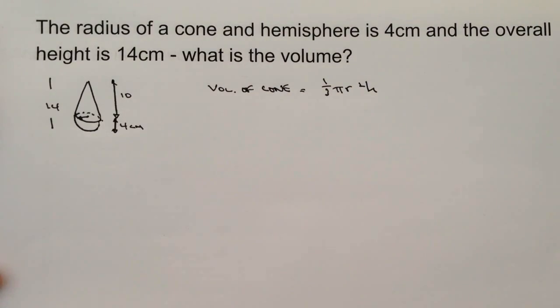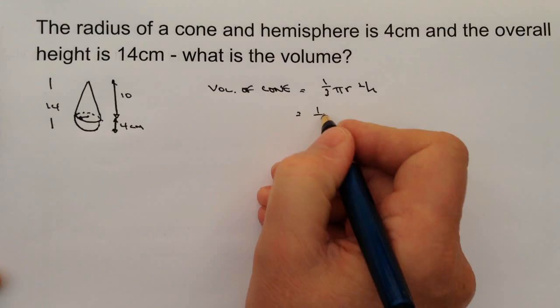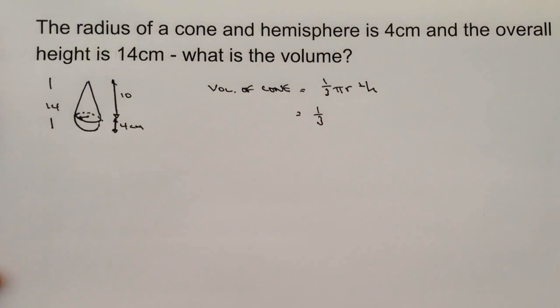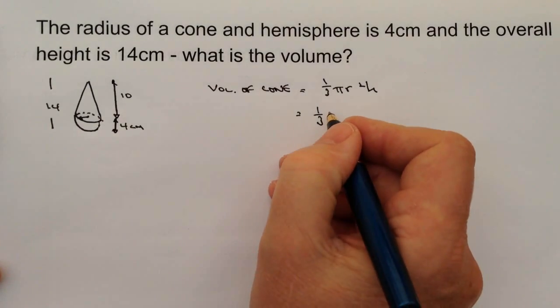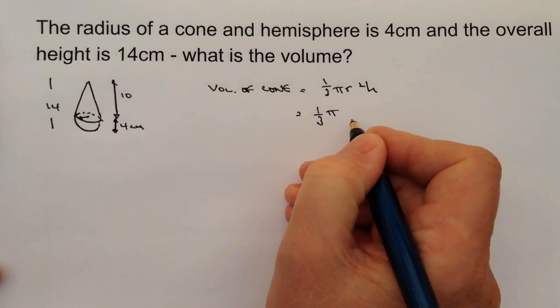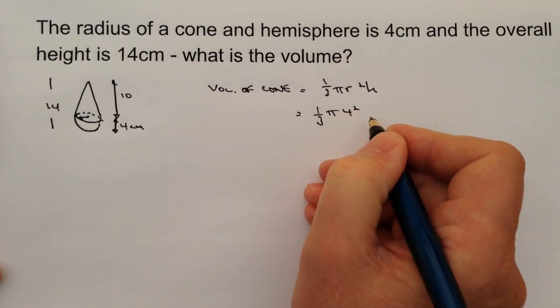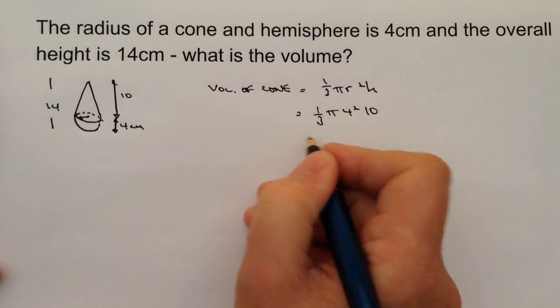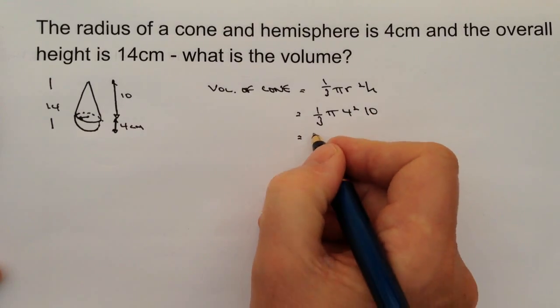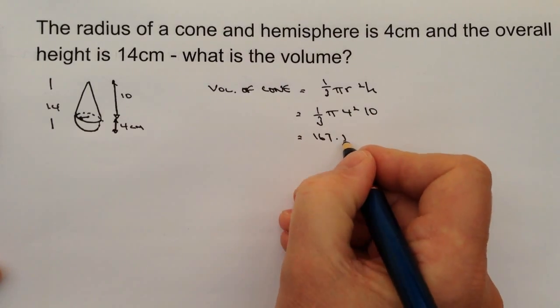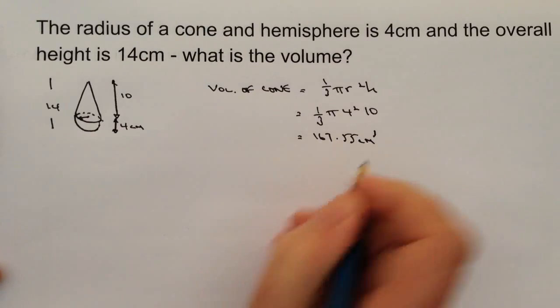Okay, what I'm going to do is put all that information in. Now I'm going to use the pi on my calculator which is a little bit more accurate than 3.142 that you get given in some exams. So it's going to be slightly different but will be a little bit more accurate. So it's a third pi r squared which is 4 squared times the height which is 10. Put that into a calculator I'm going to get 167.55 centimeters cubed.